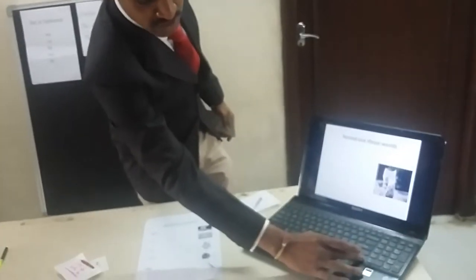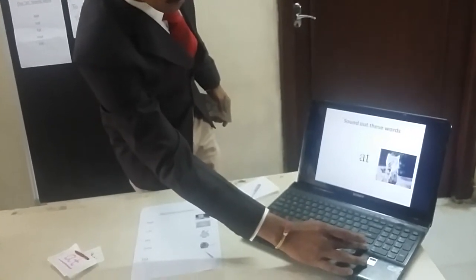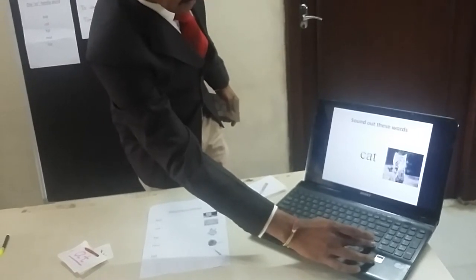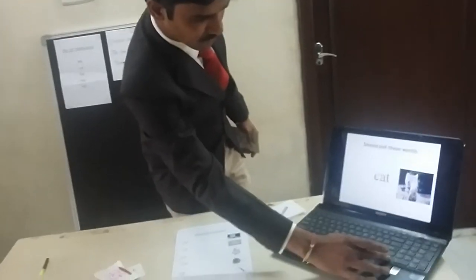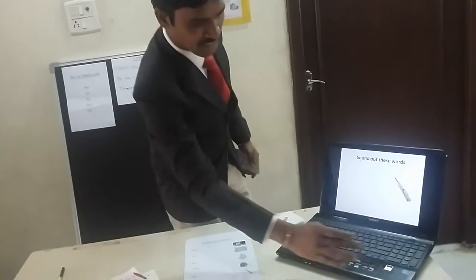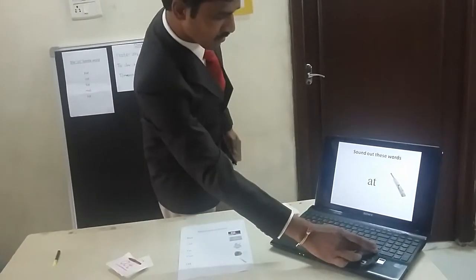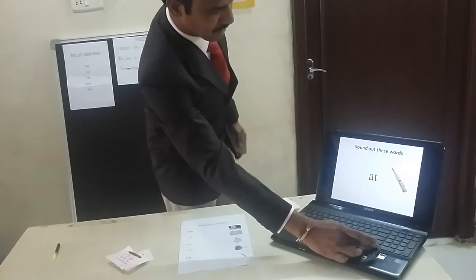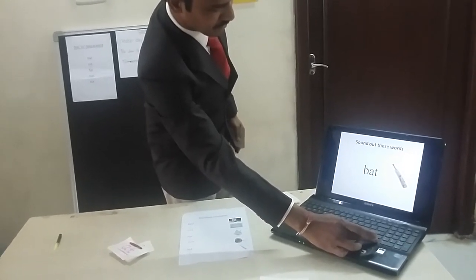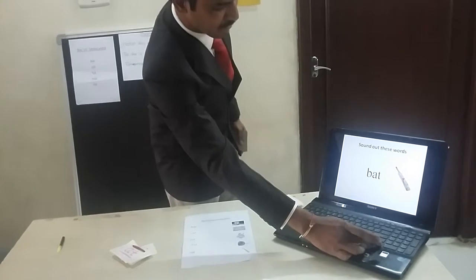Now can you sound out these words, Rajul? The AT family — when C is added to AT, it becomes cat. That's good — Rajul is doing great. Now Nithin? Bat. AT words — when B is added to AT, it becomes bat.